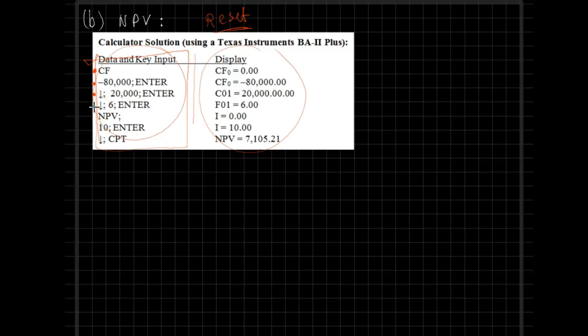Start entering the cash flows, but luckily our cash flows are for the next six years. We are expected to receive the same amount of cash flows, so therefore we can have a shortcut. Here mention that the time frame for the $20,000 cash flow is for the next six years.